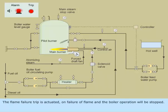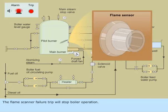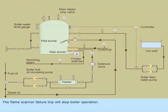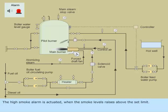The Flame Failure Trip is activated on failure of flame and the boiler operation will be stopped. The Flame Scanner Failure Trip will stop boiler operation. The High Smoke Alarm is activated when the smoke levels raise above the set limit.